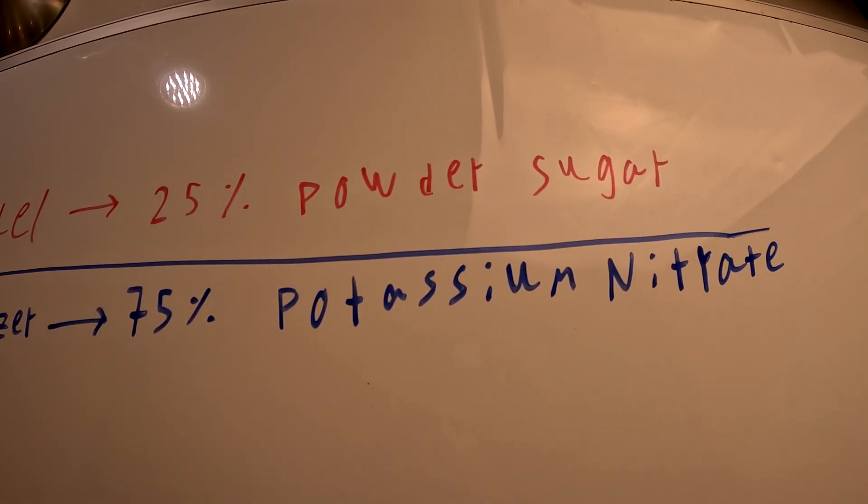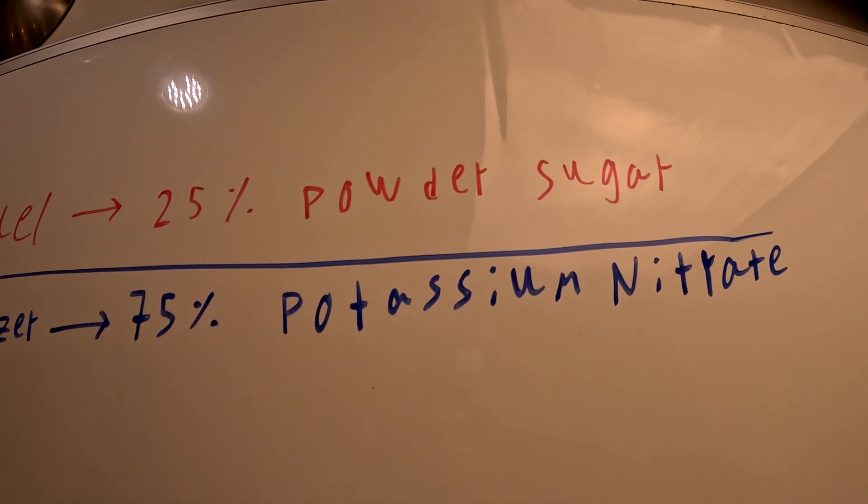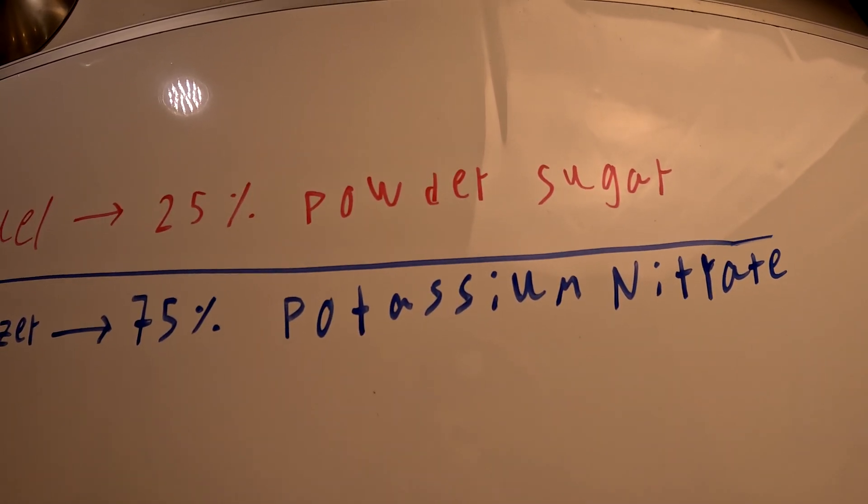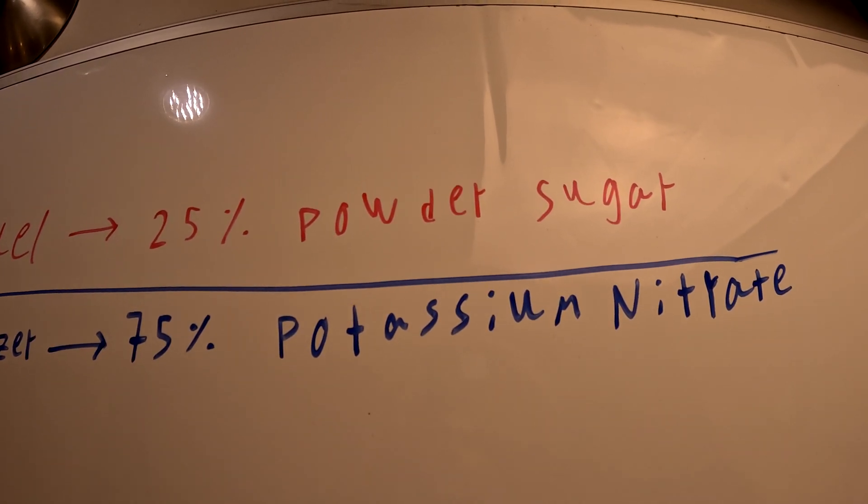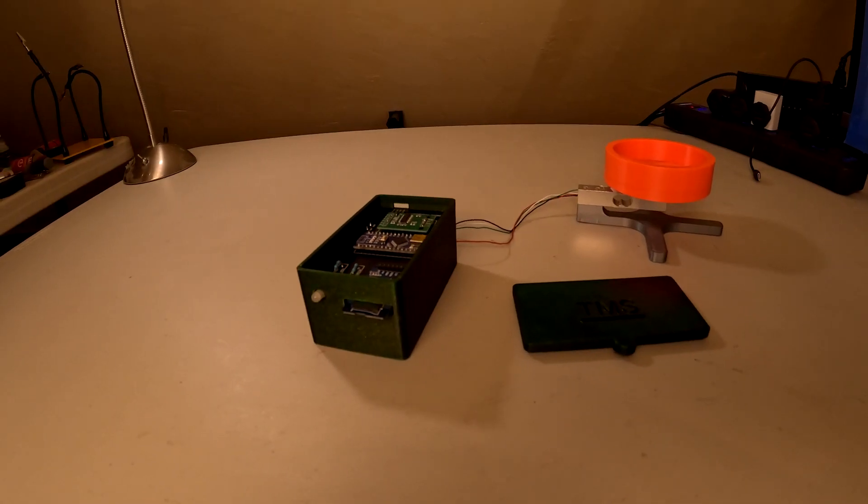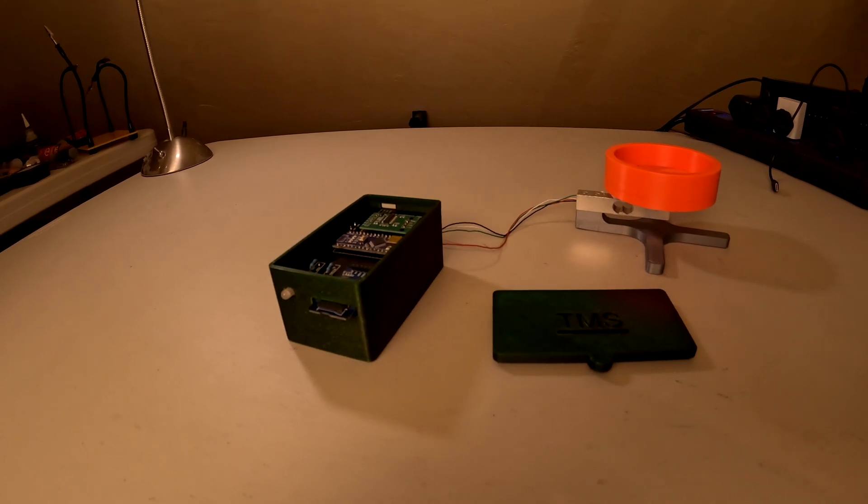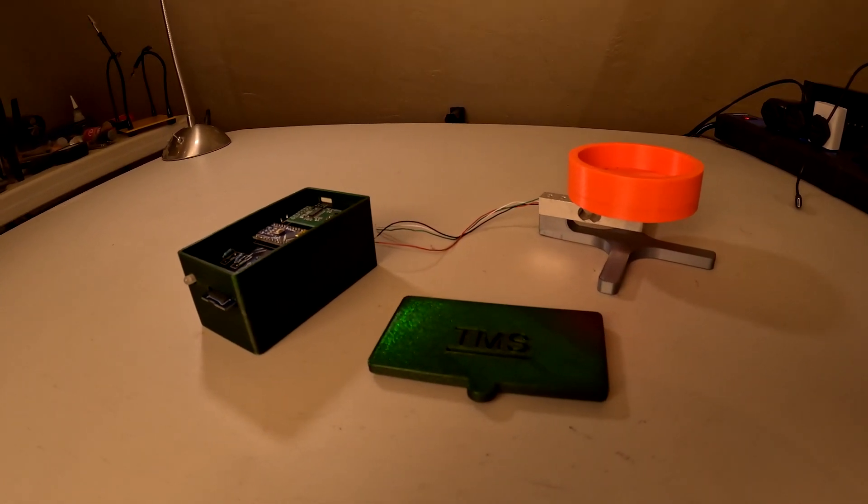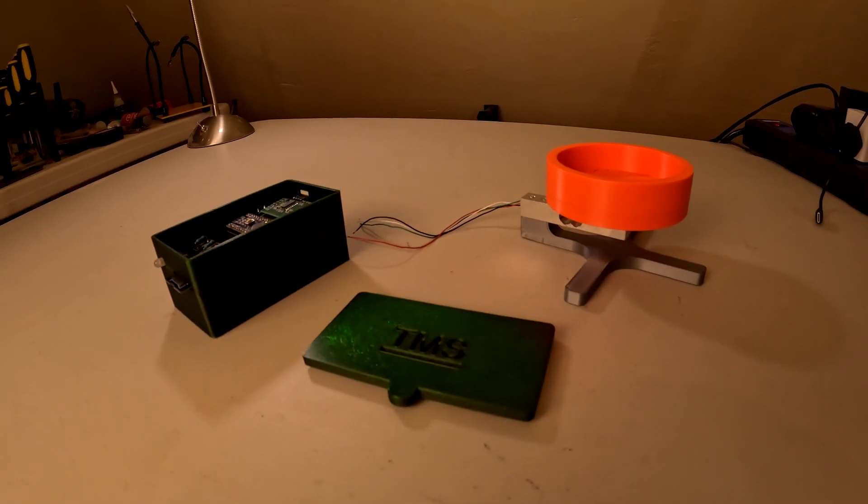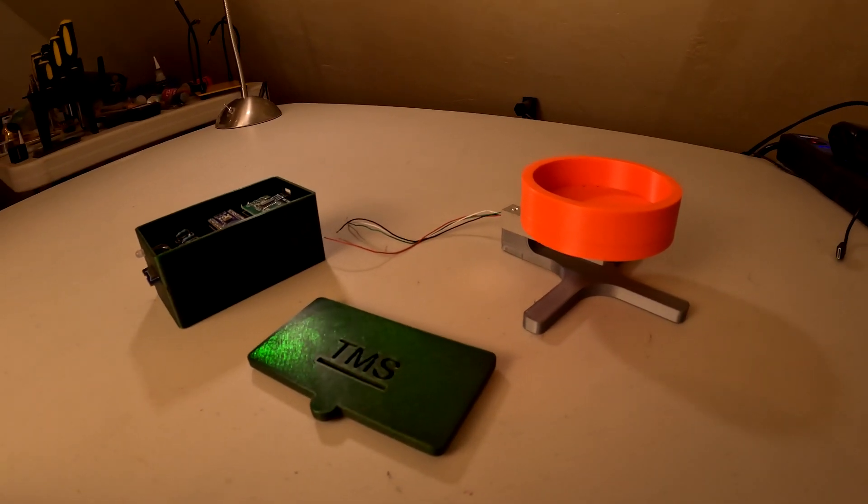Now I chose a 25% fuel to a 75% oxidizer mixture. However, this might not be the most efficient mix, I believe it is close enough. In a future video, I will optimize the fuel mixture with this device I call the TMS, or thrust measuring system. But that's for another video.